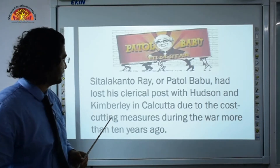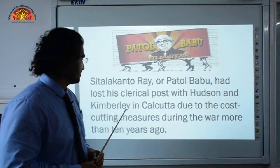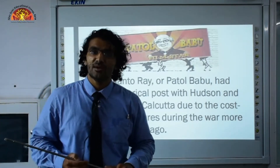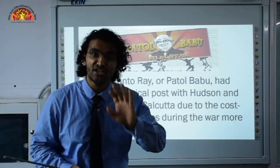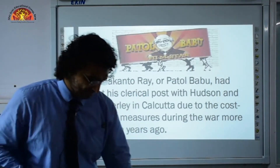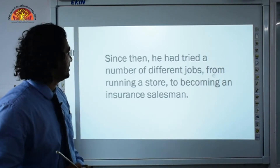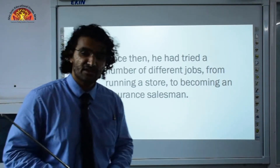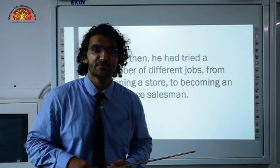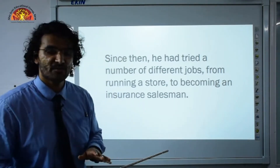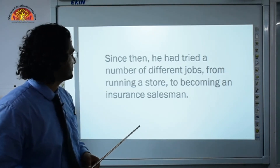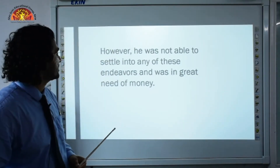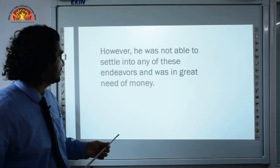Patul Babu had lost his clerical post with Hudson and Kimberley in Kolkata due to cost-cutting measures during the war, more than 10 years ago. Since then, he had tried a number of different jobs, from running a store to becoming an insurance salesman. However, he was not able to settle into any of these endeavors and was in great need of money.